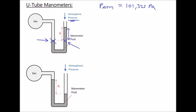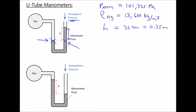Let's also assume that our fluid is mercury, and we know that mercury has a density of 13,600 kg per meter cubed. These are some of the facts that we established in the previous video. Now for this first scenario, let's say that our height of mercury in the right hand arm of the manometer equals 35 centimetres, which is equal to 0.35 metres. What we want to determine is the pressure of the gas.